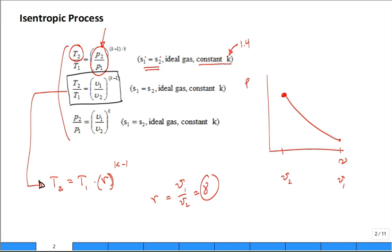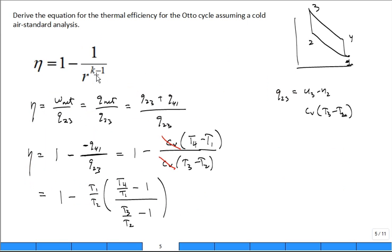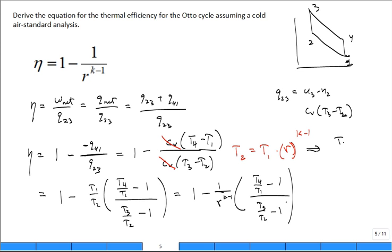So if that's true, then this becomes 1 minus 1 over R to the K minus 1 times T 4 over T 1 minus 1 over T 3 over T 2 minus 1. I just used the red equation right here, and I got T 1 divided by T 2 is equal to 1 over R to the K minus 1, and I used it to replace this.